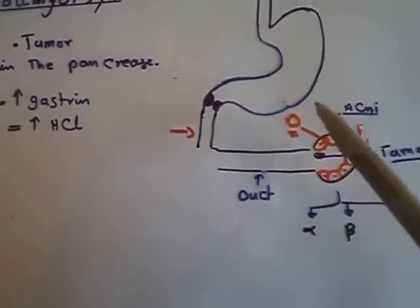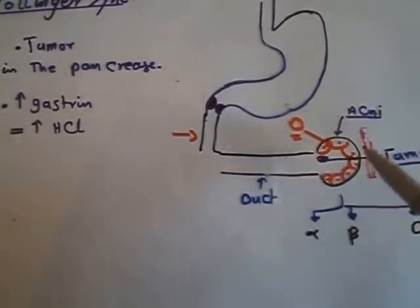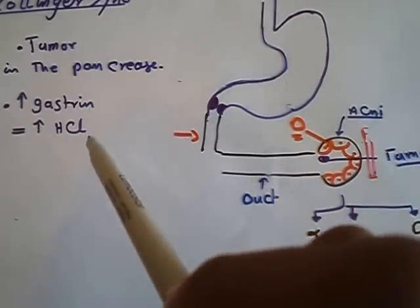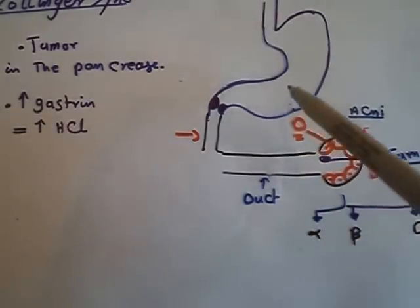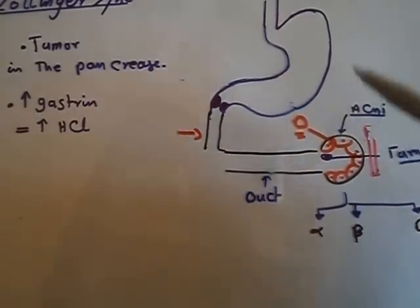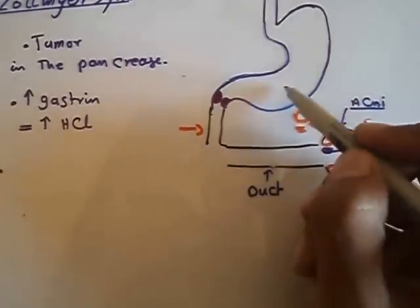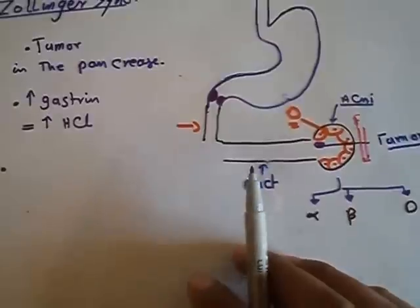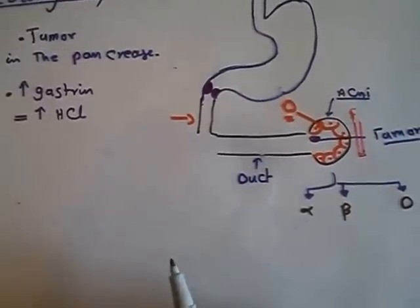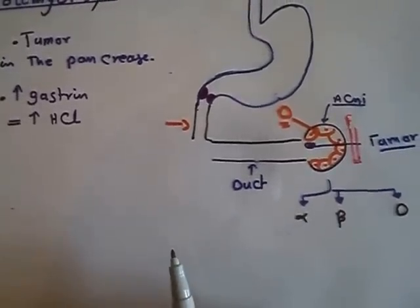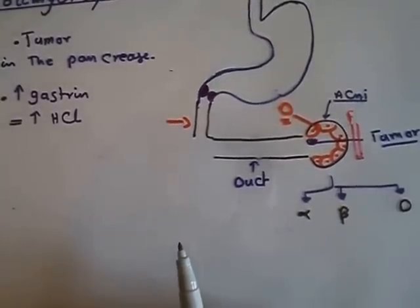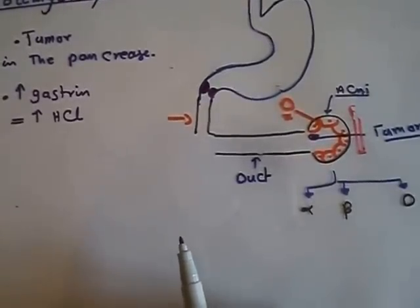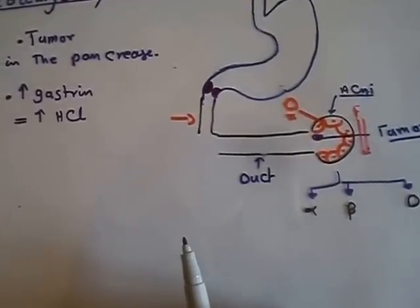After a while, the gastrin will increase the HCl again, causing another ulcer. We call this situation a recurrent ulcer. Thank you.